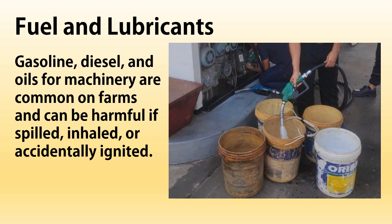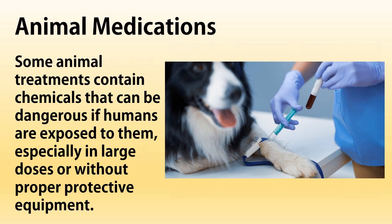Fuel and lubricants — gasoline, diesel, and oils for machinery are common on farms and can be harmful if spilled, inhaled, or accidentally ignited. Animal medications — some animal treatments contain chemicals that can be dangerous if humans are exposed to them, especially in large doses or without proper protective equipment.